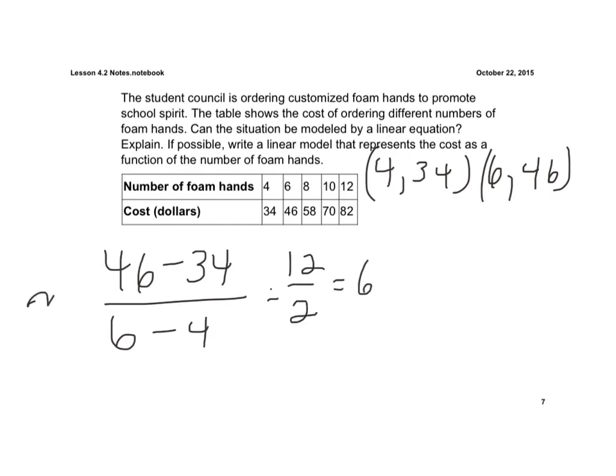So that's my slope. Now I'm going to use point-slope form, and I'm just going to use this first point that we're given. So y minus y1 would be 34 equals m, which is 6, times the quantity x minus x1, which is 4.